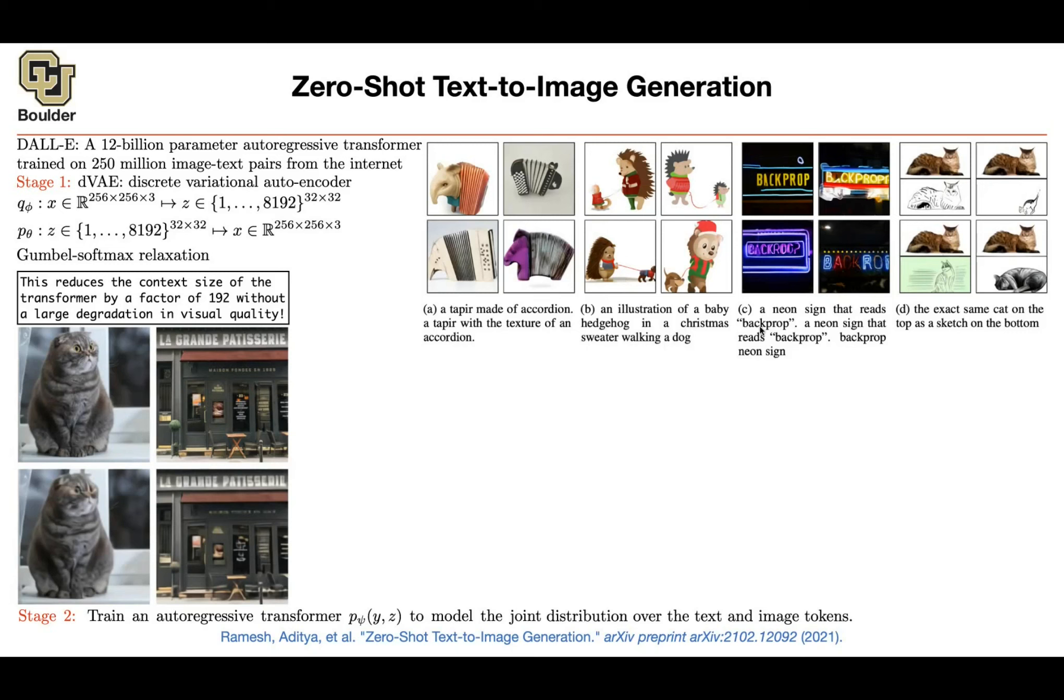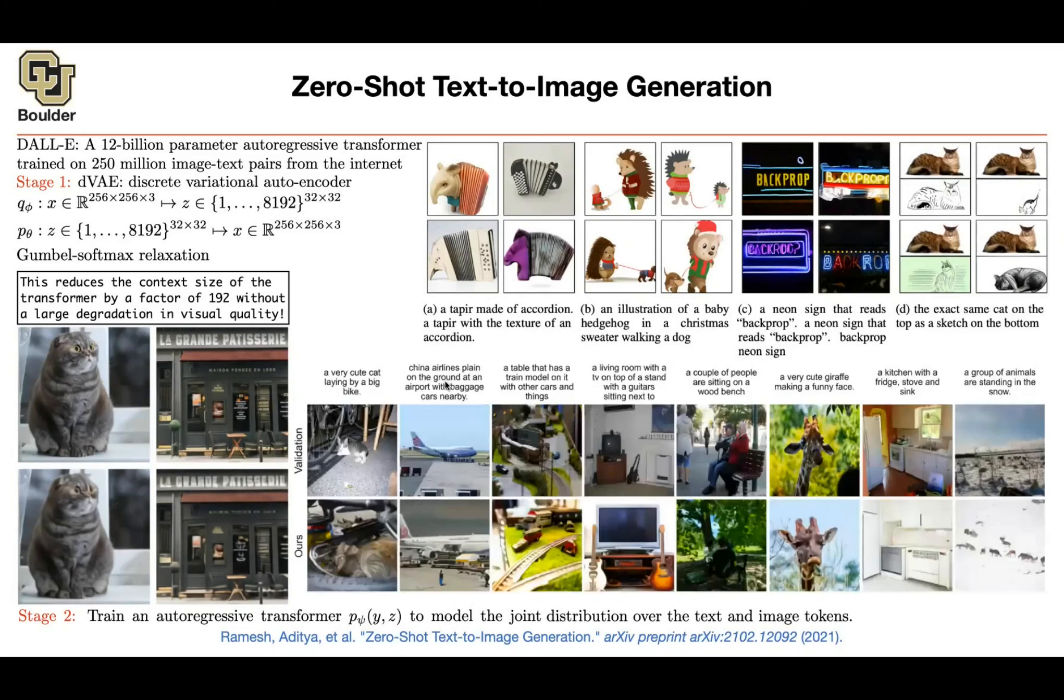So that's your sentence that you're going to condition on. And that's going to generate images like this. Or you can do image-to-image translation. And if you want to generate images that look more realistic, they are not imaginary. You can say, let's condition on a very cute cat laying by a big bike.